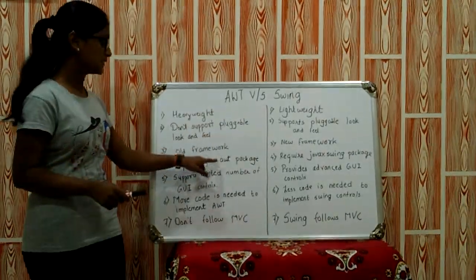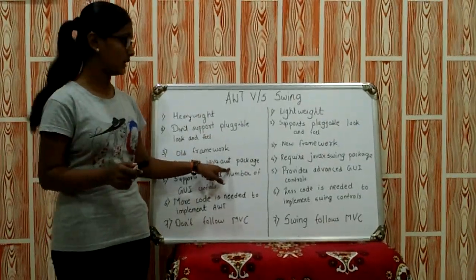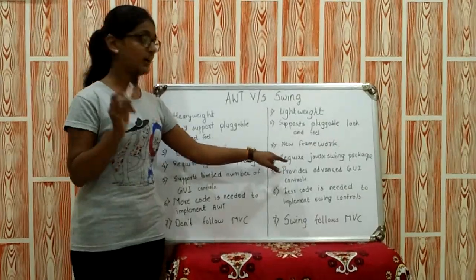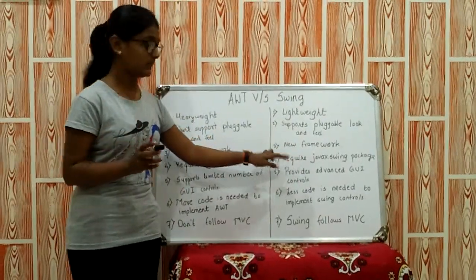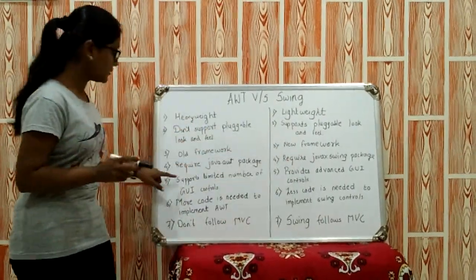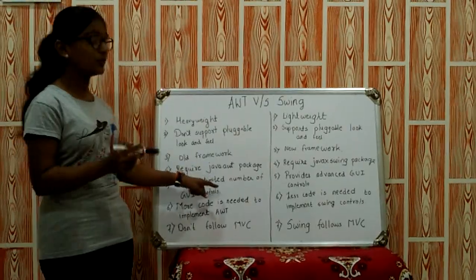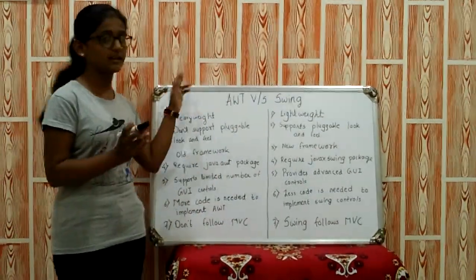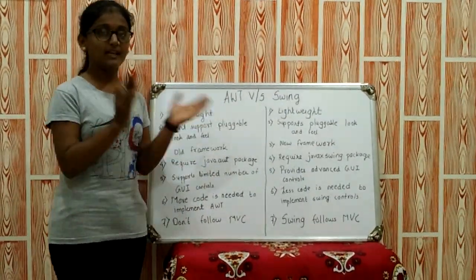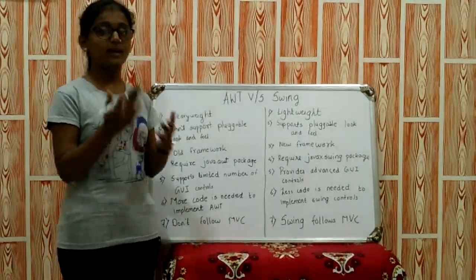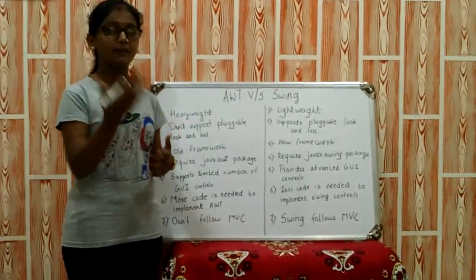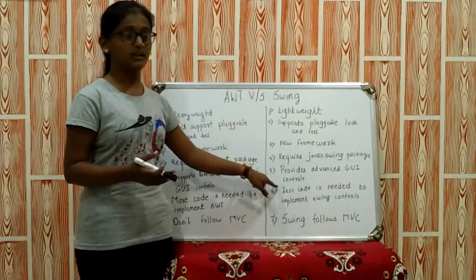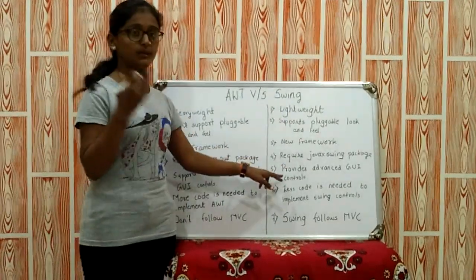Now moving towards the fifth difference: AWT supports a limited number of components — whatever components are there under AWT, they are limited — while the advanced controls are provided in Swing for GUI controls.